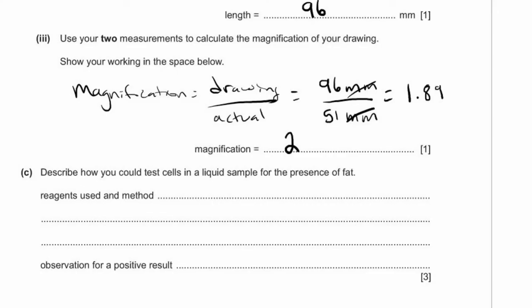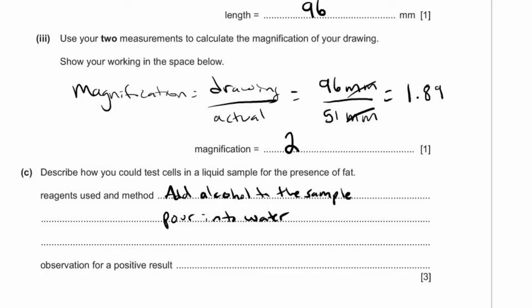C: describe how you could test cells for the presence of fat — this is the ethanol emulsion test. Add alcohol to the sample, then pour that alcohol-sample mixture into pure water. If fat is present, the positive result is a white emulsion forming.